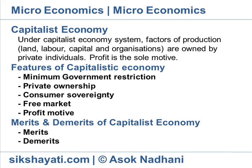Free market. The entrepreneurs have freedom to take decisions regarding production and profitability on their own. The price is determined by demand and supply in the market. Under free market economy, when consumers increase their purchase of goods and the level of demand exceeds supply, then price will start to increase. Capitalist economy uses price as the principal means of allocating resources.